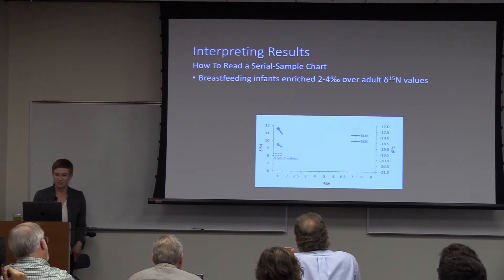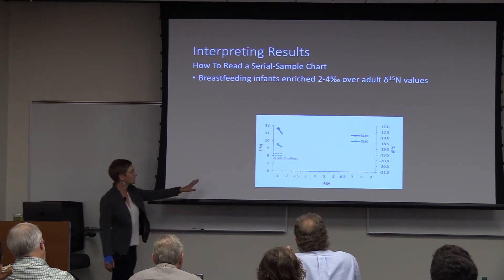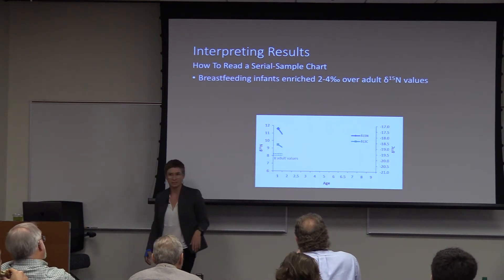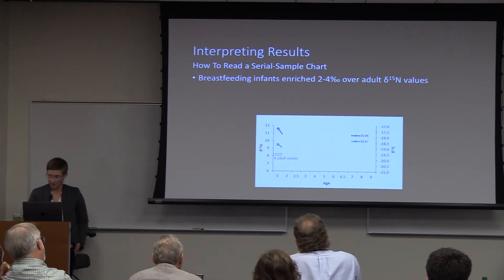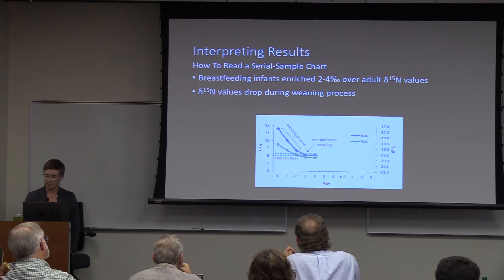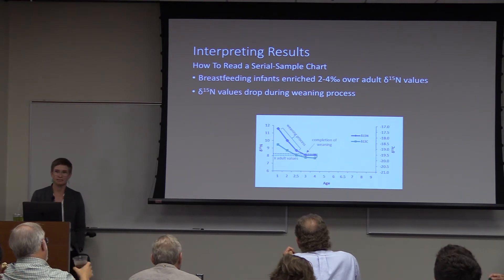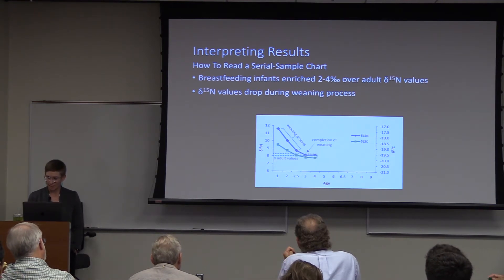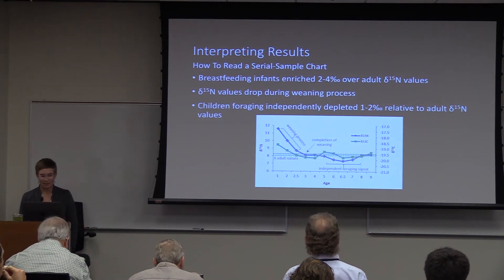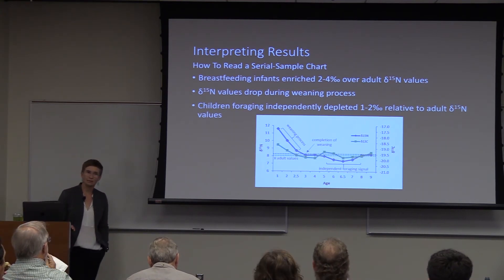Breastfeeding infants are enriched two to four per mil over adult nitrogen values. We can see the baseline adult values, and an individual who's breastfeeding will be well above that adult level. Nitrogen will drop during the supplemental feeding and weaning process, typically to the adult baseline levels — and when an individual reaches those adult baseline levels, we consider them weaned. We can then reconstruct childhood diet on roughly a six-to-twelve-month basis.